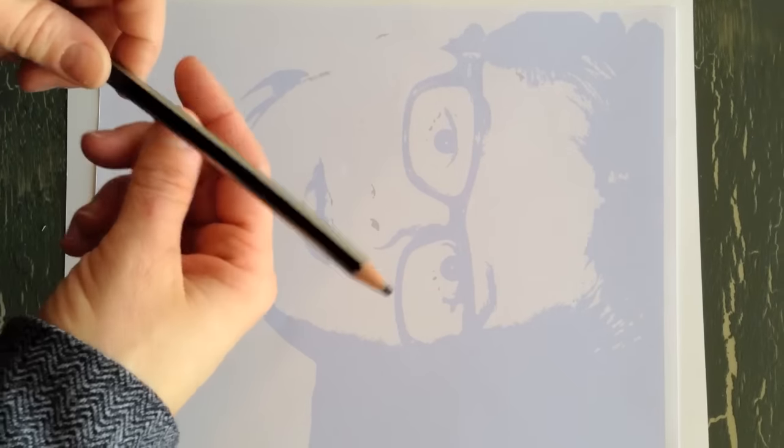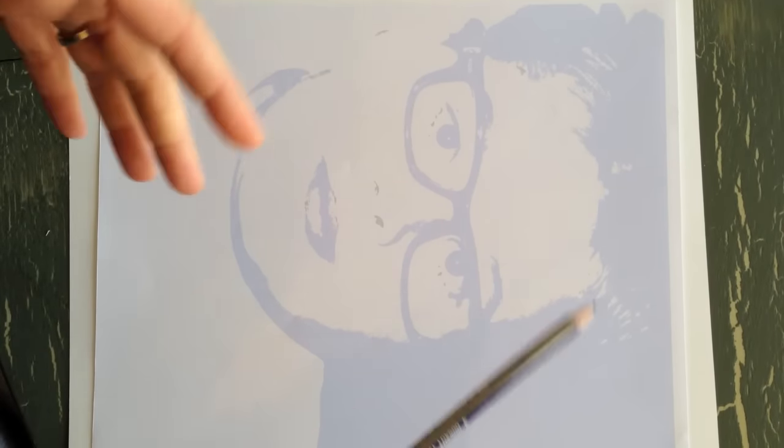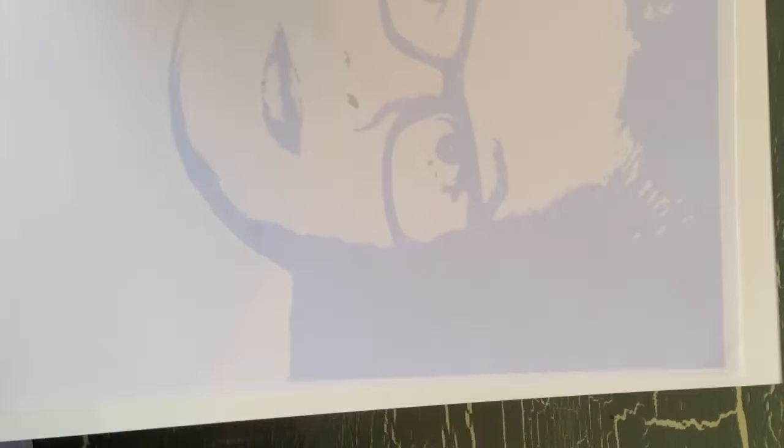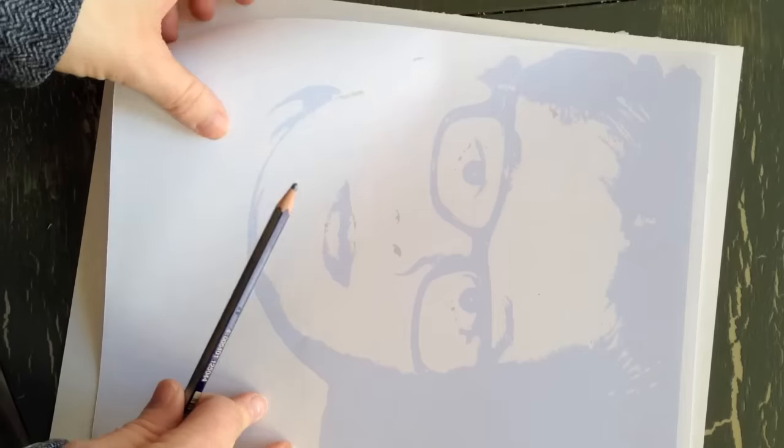This is another technique you can use if you don't have tracing paper, if the window method isn't working, and if your paper is way too thick to try to trace something through from the bottom. And what you're going to do is you're going to rub pencil all over the back of this.